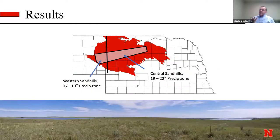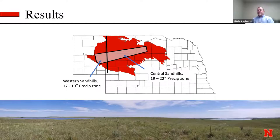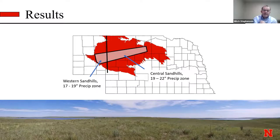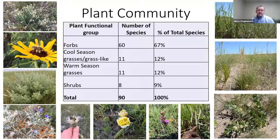We looked at ranches across the Sandhills, which are divided into different precipitation zones — from about 15 inches annually in the west up to the thirties in the east. The western Sandhills receive about 17 to 19 inches of precipitation, and the central areas about 19 to 22 inches. We visited nearly 100 different sites and found about 60 forb species, 11 cool-season grasses or grass-likes including sedges, 11 warm-season grasses, and 8 shrubs — a total of about 90 different species. As Cheryl said, grasses are the driver of these systems, but forbs are extremely important to the biodiversity of the Sandhills.